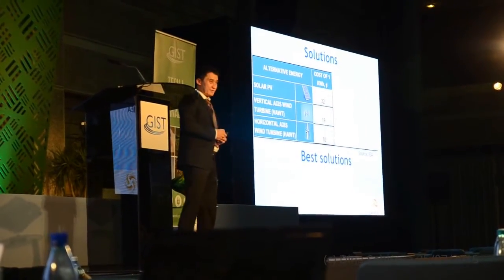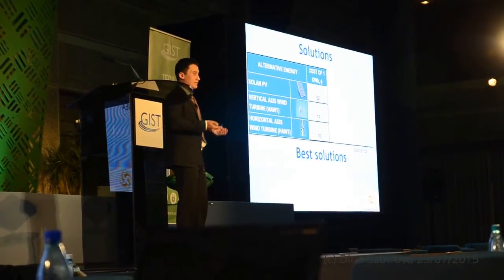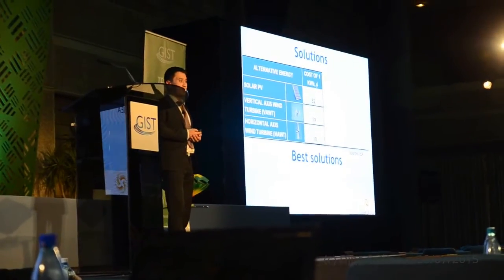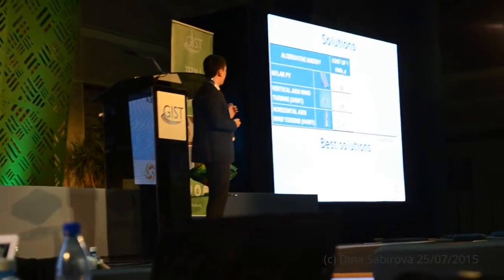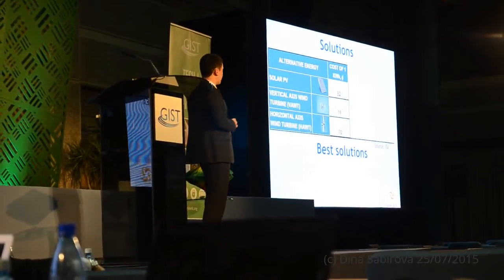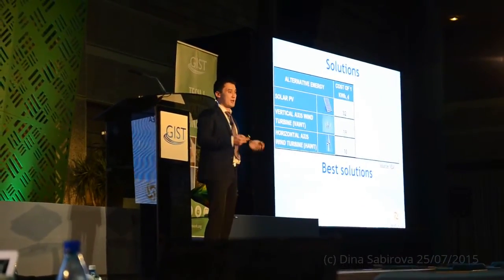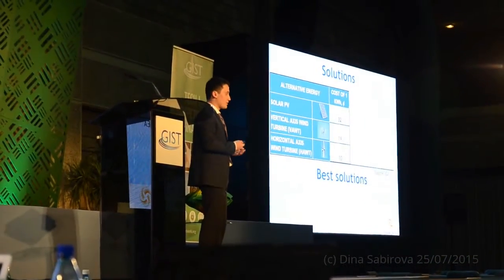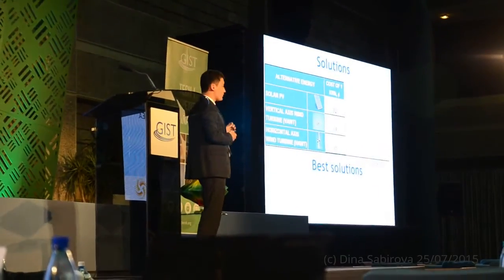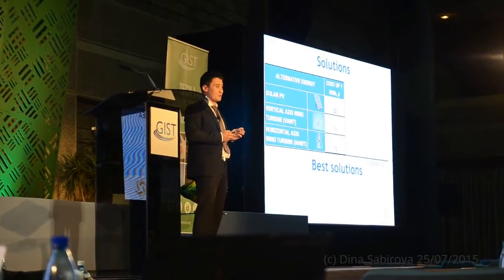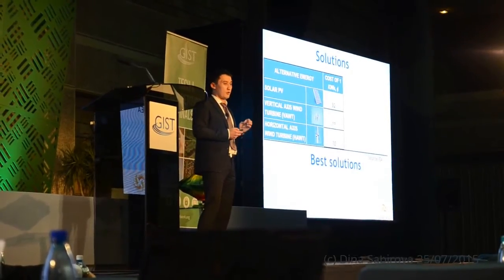Let's compare the cost of the renewable energies with fossil fuels. In Kazakhstan, fossil fuel electricity cost is 7 cents per kilowatt hour. You can see how high solar panel is — almost five times higher. Another option is wind power. We have two types: vertical axis wind turbine and horizontal axis wind turbine. The cost of vertical axis wind turbine is twice higher than the cost of horizontal.